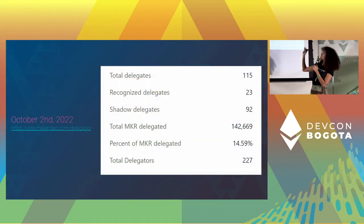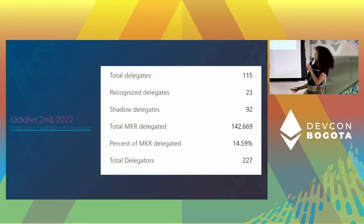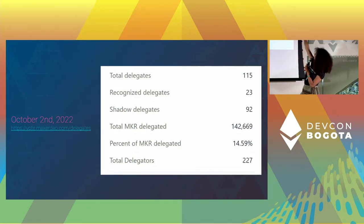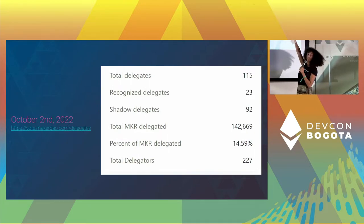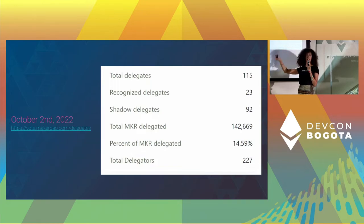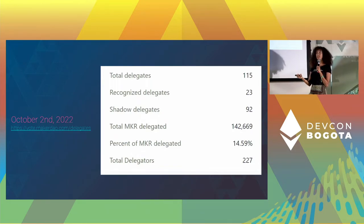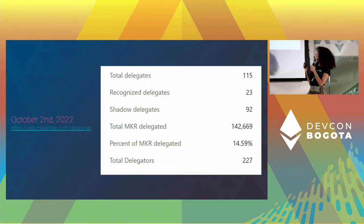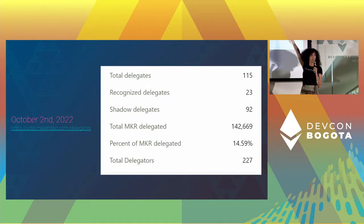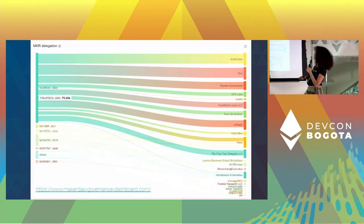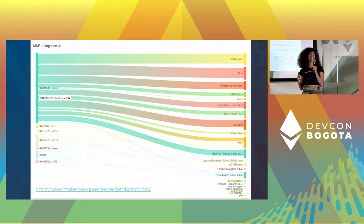From the beginning of the month we can see that there were 115 delegates, and among these, 23 are recognized delegates. What's very interesting is that almost 15% of all Maker tokens are delegated — so it has really had traction; it's not just a small side thing. In these 15%, what does it look like? Who delegates to whom? This is something we can see thanks to the amazing work of the data core unit.